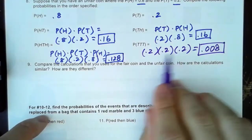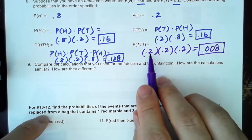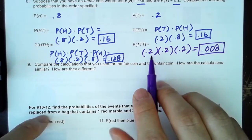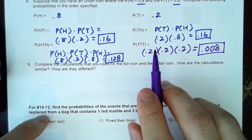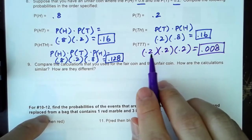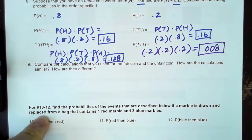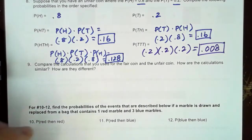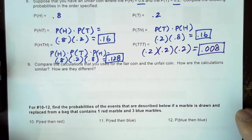The probability of three tails in a row is going to be extra challenging because tails is already not easy with this unfair coin. So this is going to be 0.2 times 0.2 times 0.2, which is 0.008 — since 2 times 2 times 2 is 8. If something has a 20% chance of occurring, getting it three times in a row compounds how difficult it is.